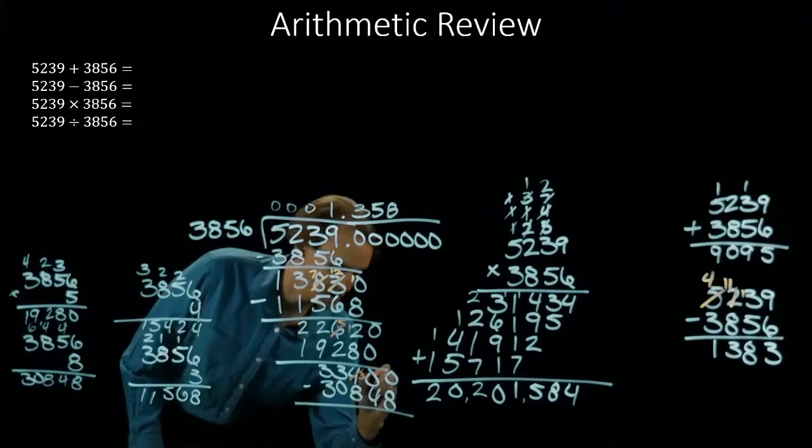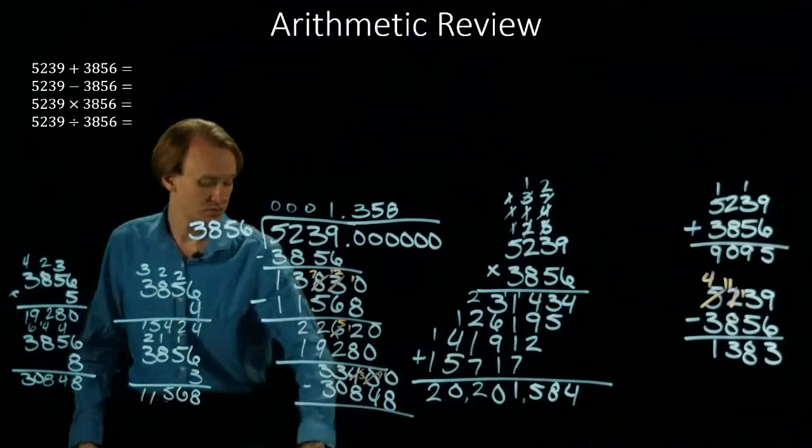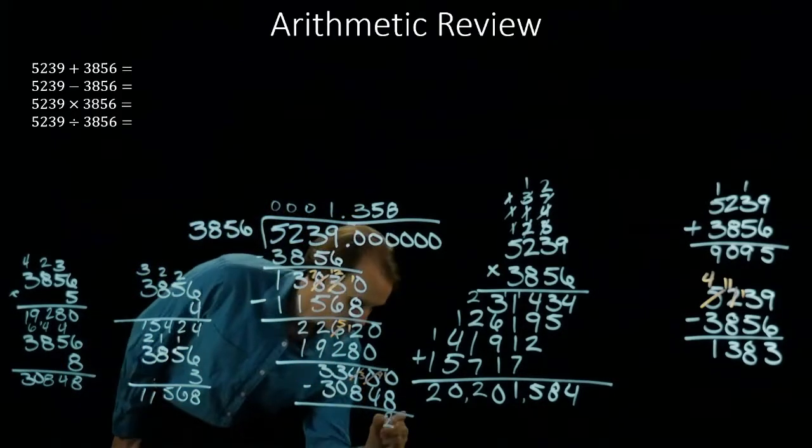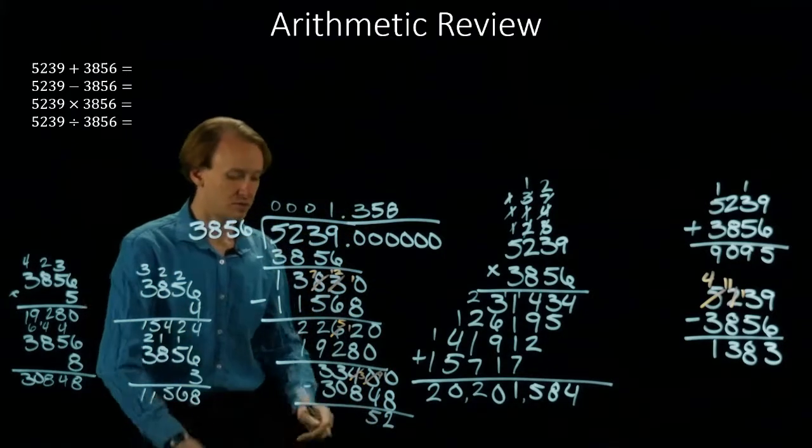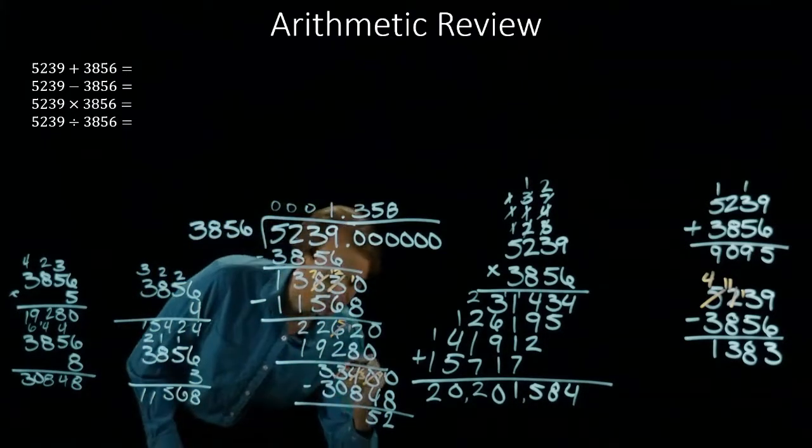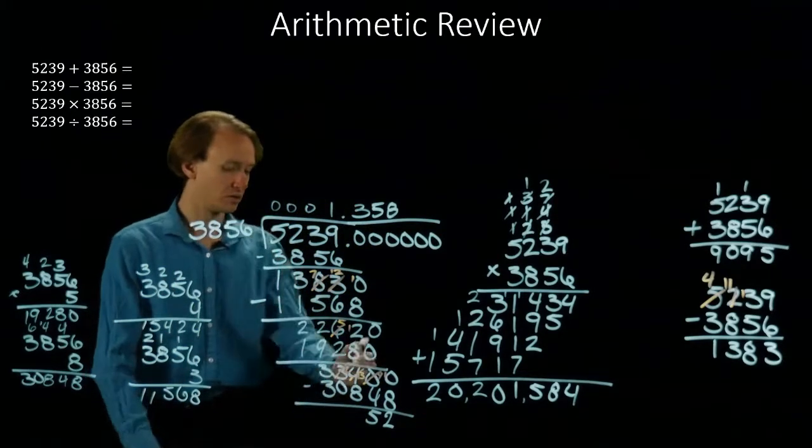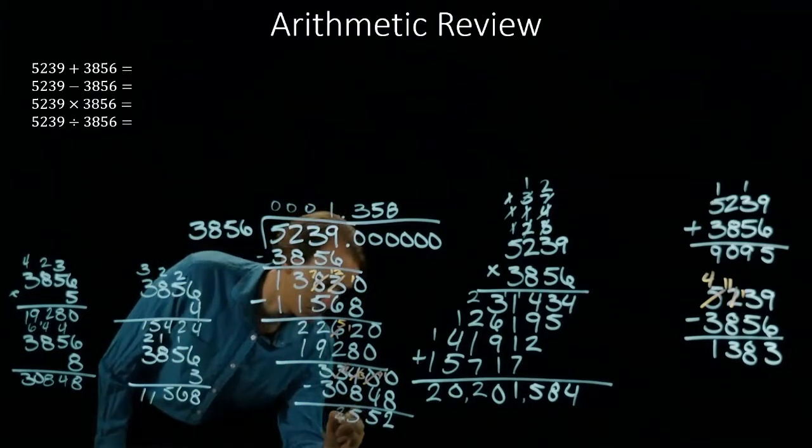So this will become a 3. This turns into a 9. Then I have a 1 to subtract from. So 10 minus 8 is 2. 9 minus 4 is 5. 3 minus 8. I need to go borrow something again. 2. Now I have a 13. 13 minus 8 will give me 5. 2 minus 0 is 2.